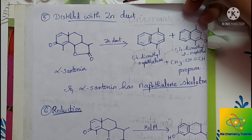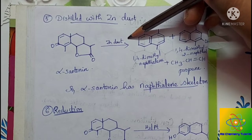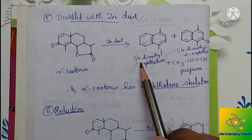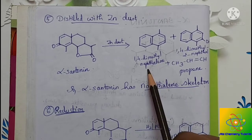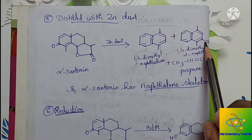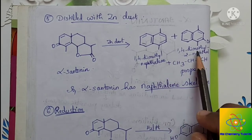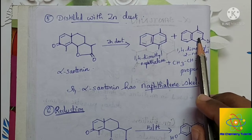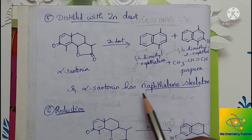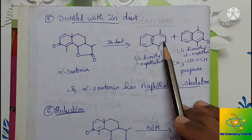The next process is distillation with zinc dust. On distillation with zinc dust, alpha-santone gives 3 compounds: 1,4-dimethylnaphthalene, 1,4-dimethyl-2-naphthol, and propene. In both cases we have a naphthalene structure, confirming that alpha-santone has a naphthalene skeleton — that is, two rings fused together.